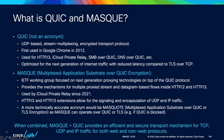We use QUIC and MASQUE underneath the hood. QUIC — sometimes referred to as Quick UDP Internet Connections — is a UDP-based stream multiplexing protocol designed around next-generation internet access. It was first used in Chrome in 2012. It's used for HTTP/3, iCloud Private Relay, Microsoft's SMB over QUIC, and DNS over QUIC. It's really designed for the next generation of protocols for the internet and eliminates some of the issues we have with TLS and TCP.